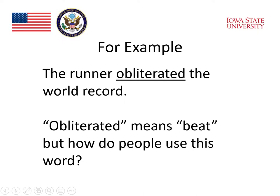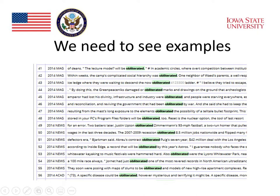But how do people use this word? We really need to see examples if we're going to understand how people use the word obliterated. It's used in lots of different contexts besides obliterating the world record. In the illustration, we see a number of examples of sentences or parts of sentences where the word obliterated has been used.